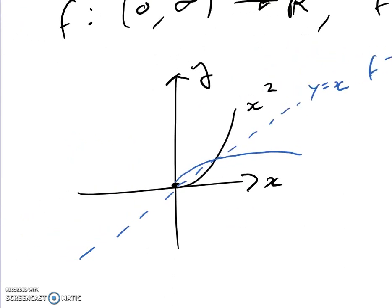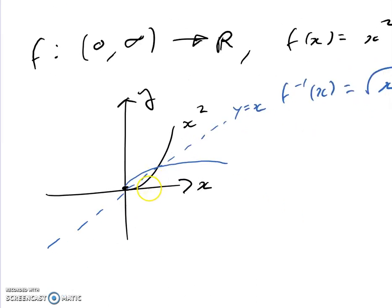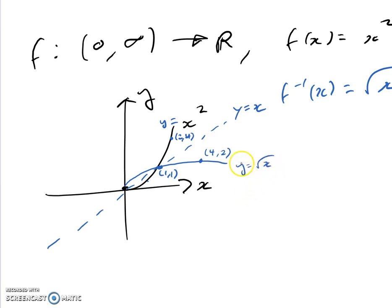If I just plot some points — this point here is going to be (1, 1), and then if x is 2, y is 4, so that's the point (2, 4). What we'll notice is on the square root function, it also has the point (4, 2). Because this is y equals root x — when you sub in x is 4, you get y is 2. So hopefully you see that the x and y values are swapped around.